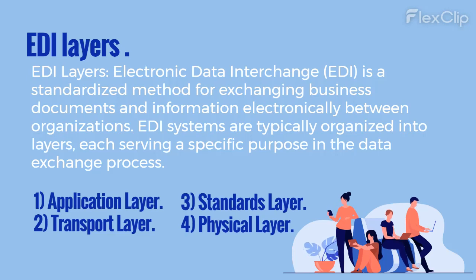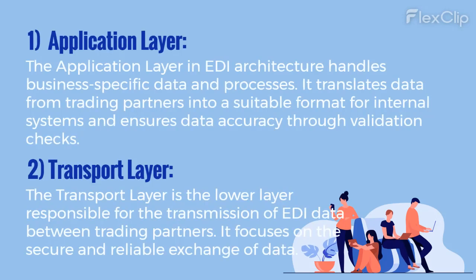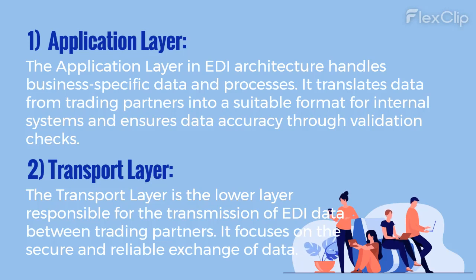The four EDI layers are: One, Application Layer; Two, Transport Layer; Three, Standards Layer; Four, Physical Layer. The Application Layer in EDI architecture handles business-specific data and processes. It translates data from trading partners into a suitable format for internal systems and ensures data accuracy through validation checks.